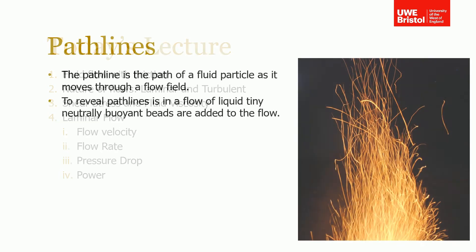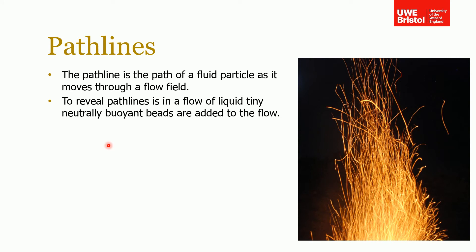Firstly, I want to introduce some terminology — ways that you can visualize different types of flow. The first is a path line, and the path line is the path that a fluid particle takes as it moves through a flow field. This is illustrated on the right-hand side by a bonfire image taken with a long exposure camera, so you can see the path of each particle coming out of the fire and moving upwards. You can see the individual path lines — one started here and went all the way to the top.